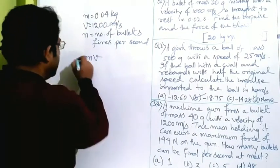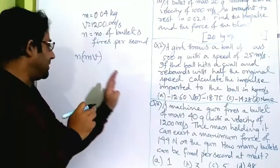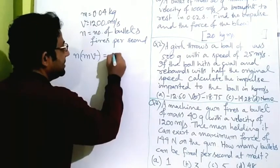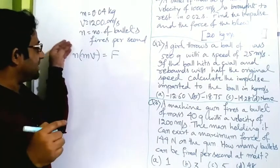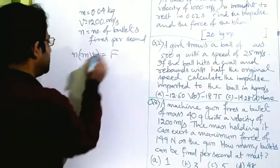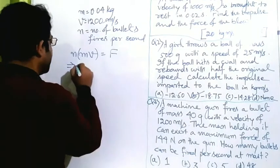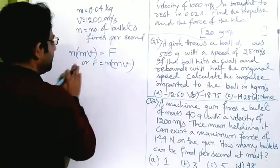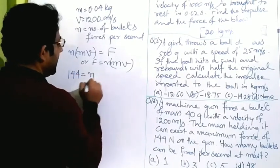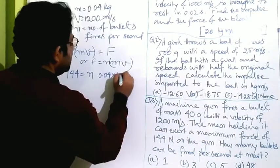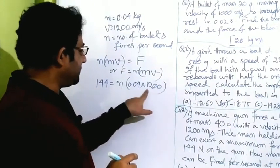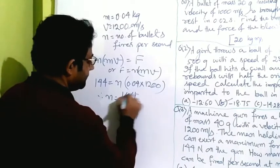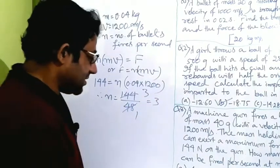The momentum of one bullet is mV. If n bullets are fired per second, the total momentum per second is n times mV — and total momentum per second is nothing but force, since force equals rate of change of momentum. The maximum force is 144 newton, so F equals n times m times V. That gives 144 equals n times 0.04 times 1200 equals 48n. Therefore n equals 144 divided by 48 equals 3. So three bullets can be fired per second.